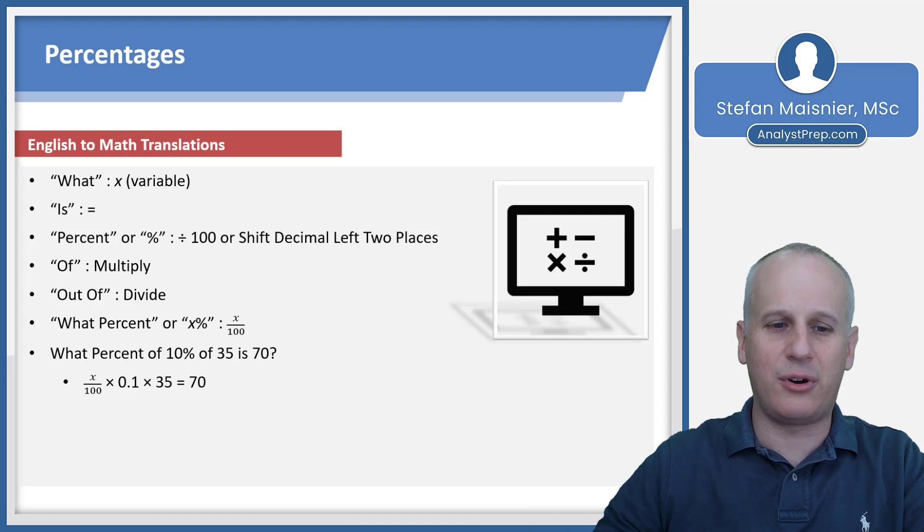You can just translate directly across and now it's just a matter of combining terms. So the x over 100, we could just make that x times 0.001 instead because you just divide 0.1 by 100, insert the two zeros after the decimal but before the one, times 35 is equal to 70.